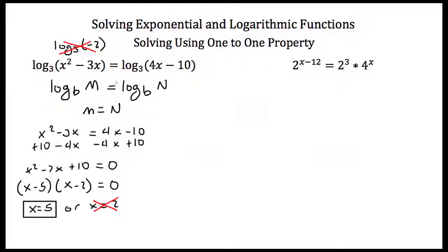So if you're taking the same log of both sides of your equation, whatever's inside the logs can be set equal — you can just drop the logs and solve for x. Now the same thing works for exponential equations. If I have 2 to some power a equal to 2 to some other power b, I'm raising 2 by some power on each side, and if these numbers are going to be equal, then a has to be equal to b.